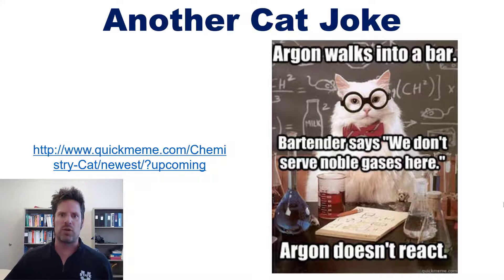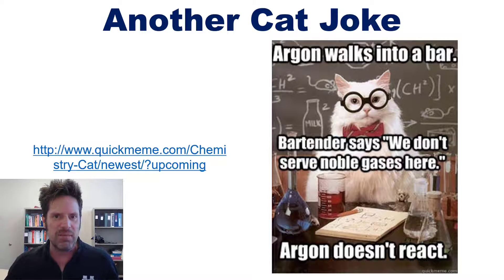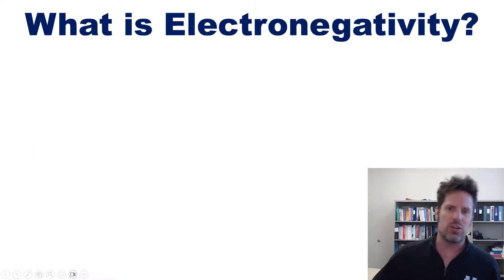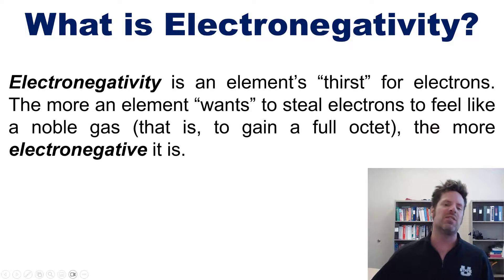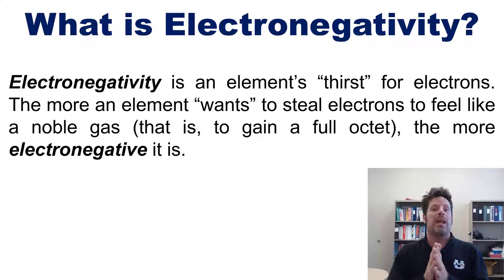All right, for this one I need to do a quick review of electronegativity, but what in the world is that? Well, as we've discussed in an earlier chapter linked to floating over my head or in the description beneath this video, electronegativity is an element's thirst for electrons. The more an element wants to steal electrons to feel like a noble gas—that is, to gain a full octet—the more electronegative that element is.